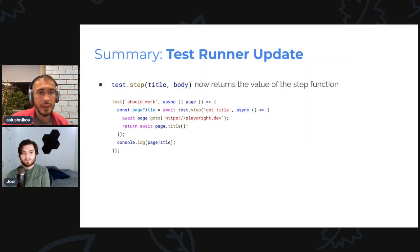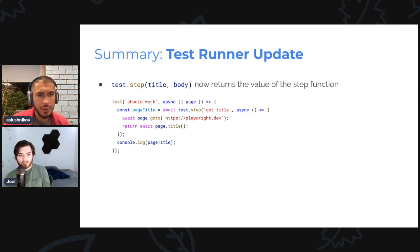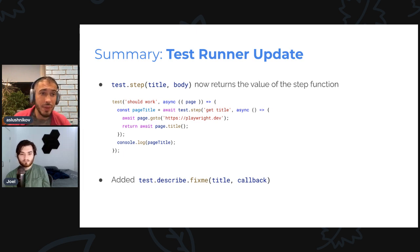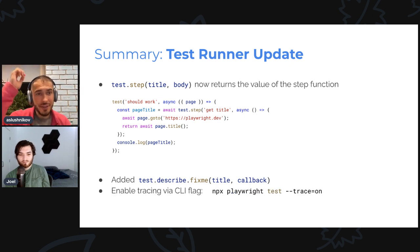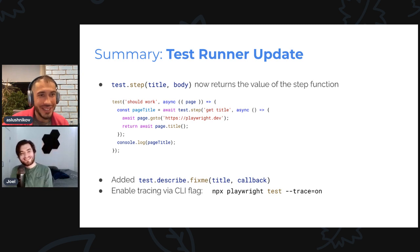Next chapter: test runner updates. First and foremost, `test.step` now returns a value from the step function — so if you return something you can assign it to a variable and reuse it later. People have been asking for this. `describe` now has `fixme` — not sure why we didn't have `describe.fixme` before, but now we do. And finally there's a new CLI flag: `--trace=on`, a handy way to record a trace for anything that's failing.